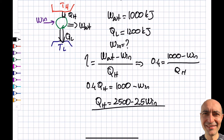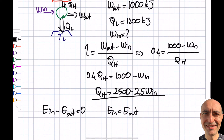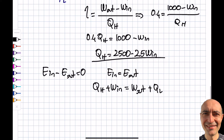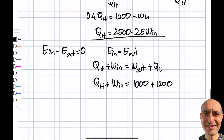I'll apply the first law of thermodynamics to the cycle: E_in = E_out, since the net change is zero for a cycle. Energy coming in: Q_H and W_in. Energy going out: W_out and Q_L. So the equation becomes: Q_H + W_in = W_out + Q_L, which gives Q_H + W_in = 1,000 + 1,200 = 2,200 kilojoules.